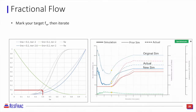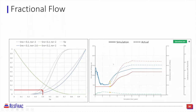Looking at the simulation result, the dotted trend was my prior simulation; the solid line is the new simulation using updated rel perms; and the dashed trends are the historical data. With my updated simulation model, I am matching that stabilized water cut period at about 10–11%. However, my GORs still do not match.